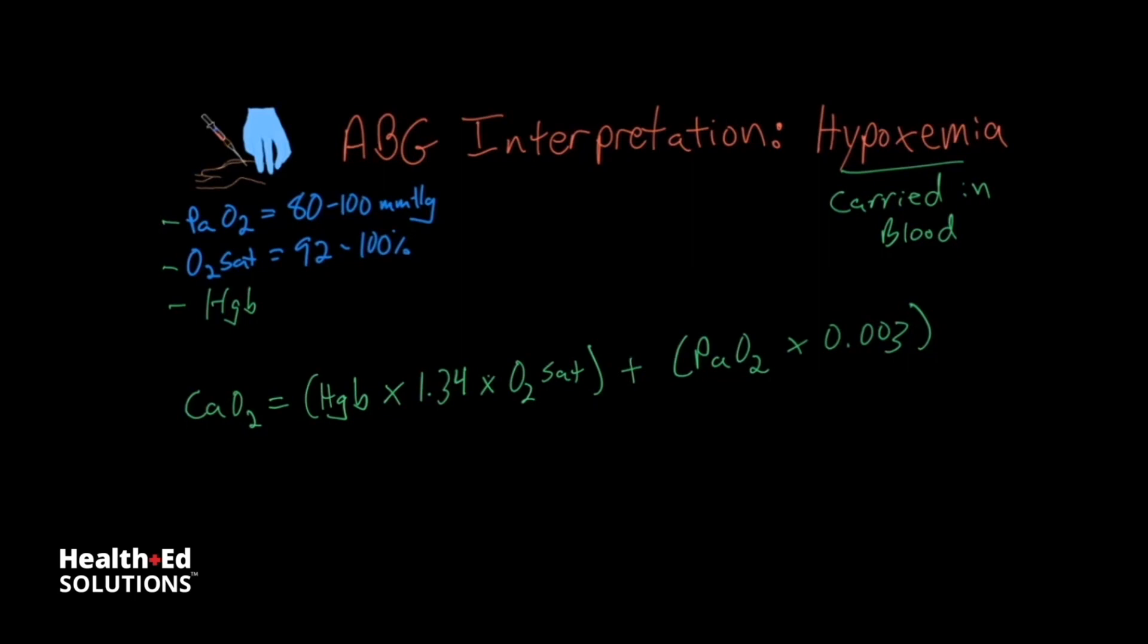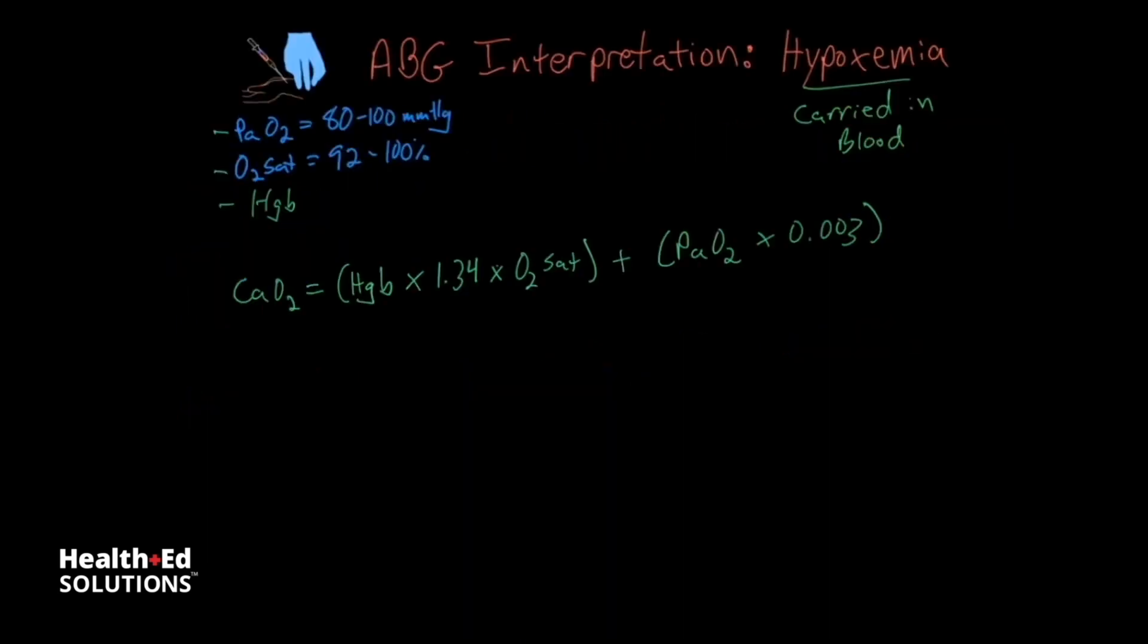We have this constant here, which is a constant as long as things are normal. It can vary. There are some things that can cause changes to this oxygen binding coefficient, and those are things like carbon monoxide poisoning, or methemoglobinemia. And then we also need to consider the hemoglobin concentration of the blood as well.